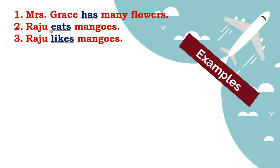'Raju likes mangoes.' He is not showing any action. When I like something, it is there in me - I like it but I am not necessarily eating it. So 'likes' is a state of being of an individual. 'Raju likes mangoes' - it is a state of being.